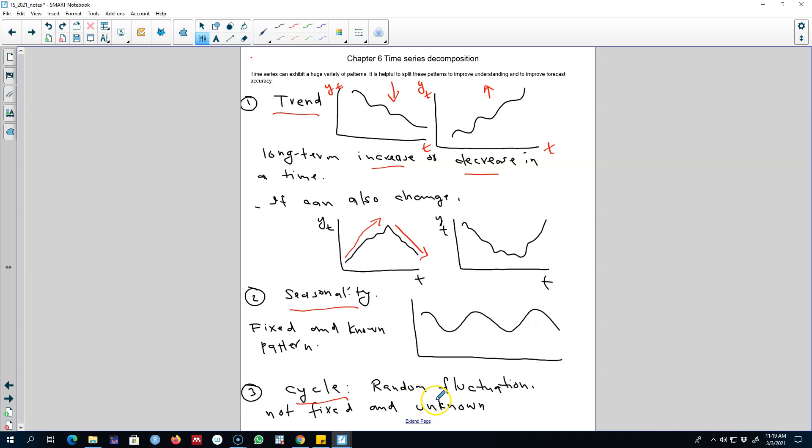and then there may be some ups and downs in a time series of not fixed and known frequency, and those are called cyclical patterns. So these are the three major patterns that we may observe in a time series.